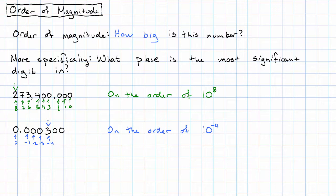That's all there is to order of magnitude, but you see that it gives you a very vague idea of just how big the number is. Something on the order of 10 to the 8th is going to be in the hundreds of millions. Something on the order of 10 to the negative 4 is going to be some number of 10,000ths.